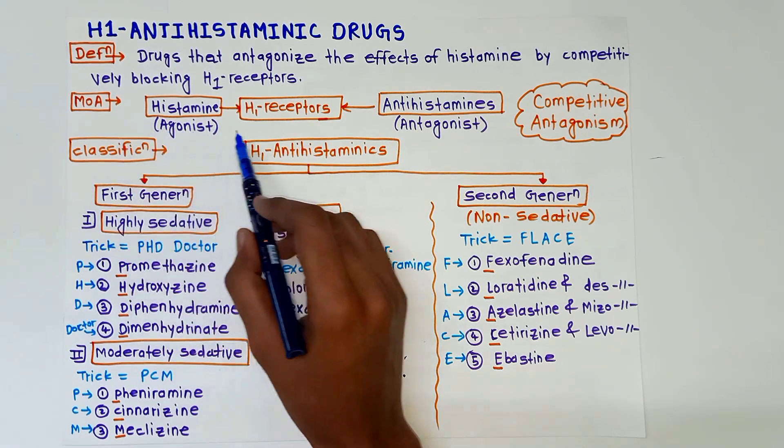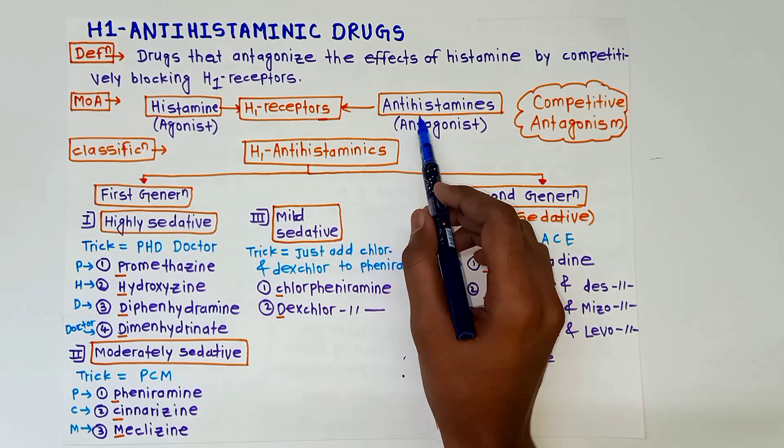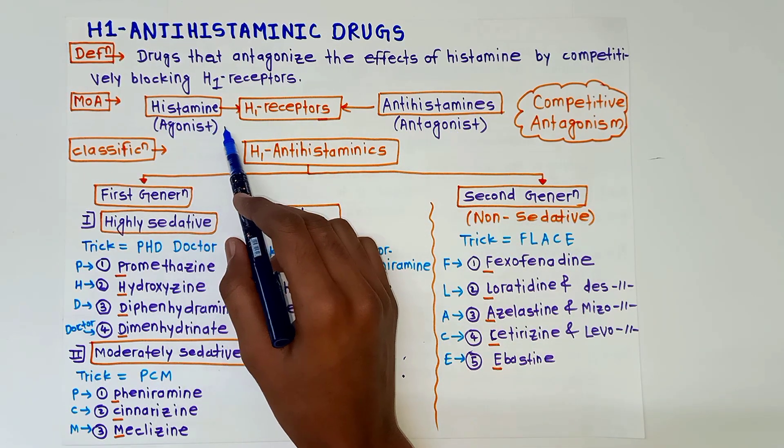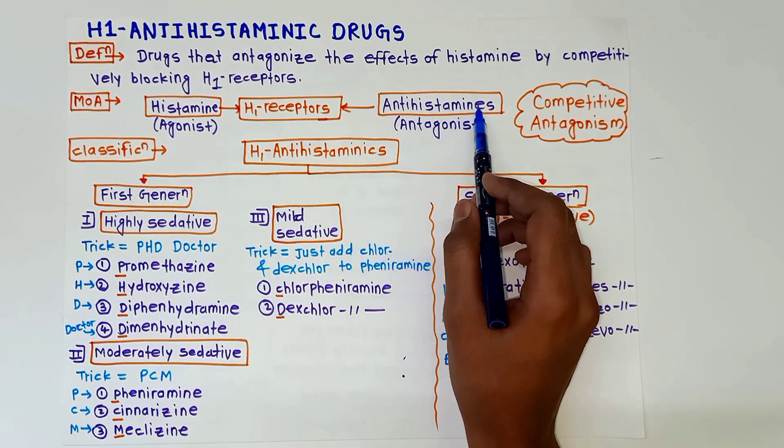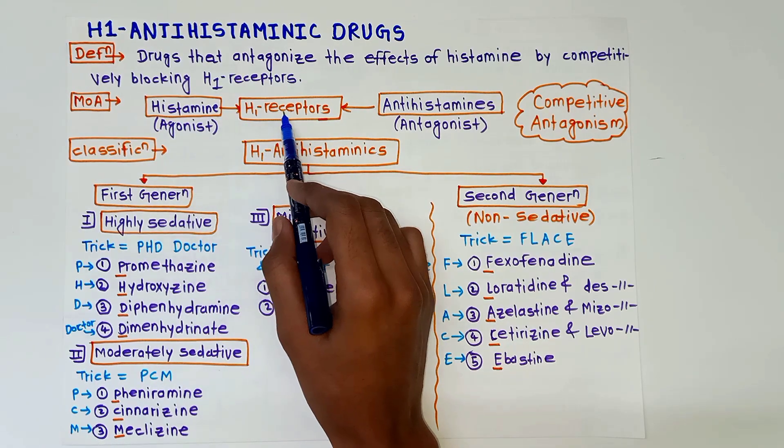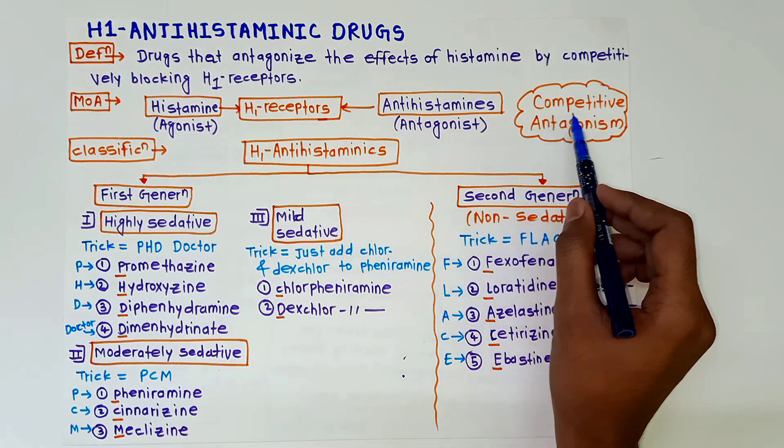Next is mechanism of action. In this case antihistaminic drugs act as antagonist and histamine acts as agonist on the H1 receptors. So antihistaminic drugs competitively block the effects of histamine on the H1 receptors. This phenomenon is called competitive antagonism.